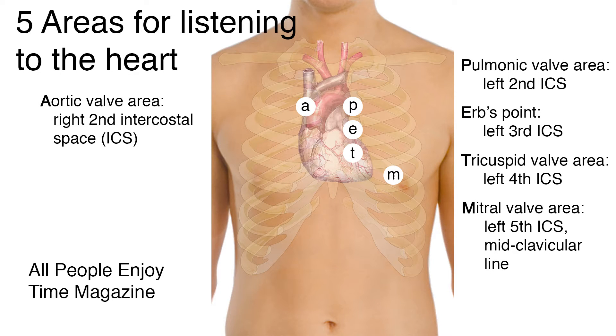Listening to the heart is accomplished by using five systematic locations on the anterior chest wall. These landmarks are the places on the chest where you can best hear sounds from each of the respective heart valves, even though they are not at the exact anatomic site. The stethoscope is positioned downstream from the flow of blood through the valves. Use the diaphragm of the stethoscope, switching to the bell to hear lower-pitched sounds.